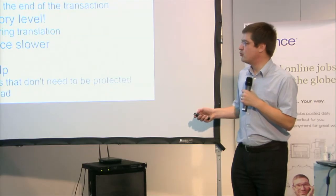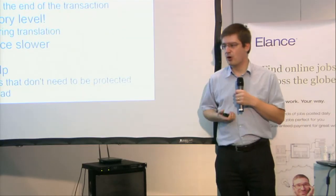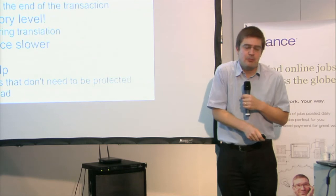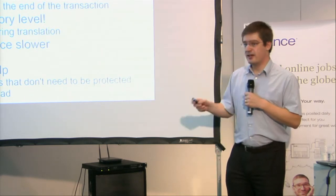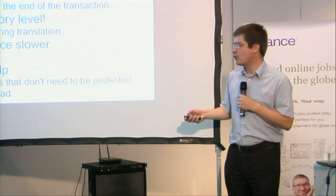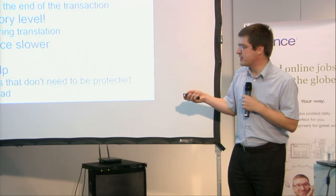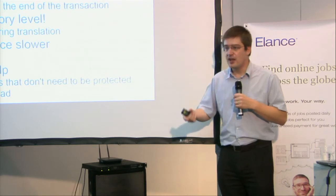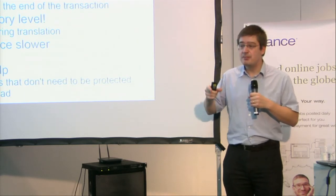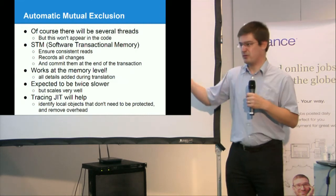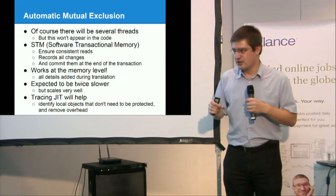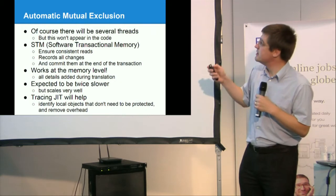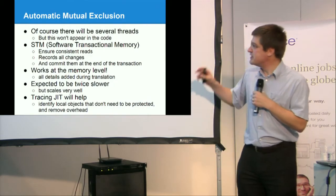So PyPy has a transformer, has a translation aspect for this. So all details are added during translation. When your interpreter is about to read one field from a Python object, when the interpreter is about to do everything else, all these operations done by the interpreter will be recorded and committed only at the end of transaction. Of course, this is expected to be twice slower. With one single worker, if you have to trace everything on writes, everything afterwards, it's mostly probably double of writes. So it's expected to be twice slower. But the idea is that it can scale very well.